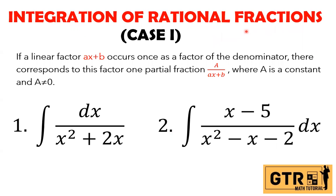When we say rational fractions, it's a fraction that contains polynomials on the numerator and denominator, just like in our two examples. We will discuss Case Number 1 — we have four cases and I will upload videos on each case. Case 1: if a linear factor AX plus B occurs once as a factor of the denominator, there corresponds to this factor one partial fraction A over AX plus B, where A is a constant and A is not equal to zero.